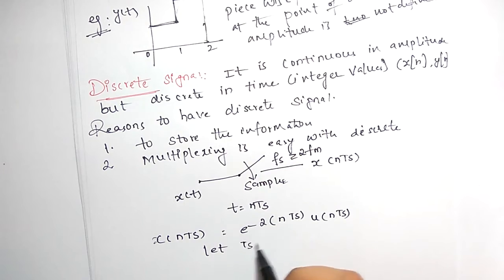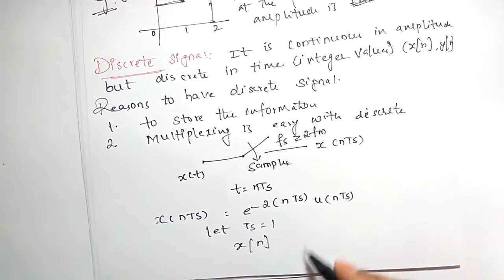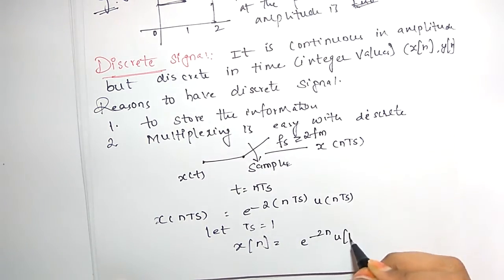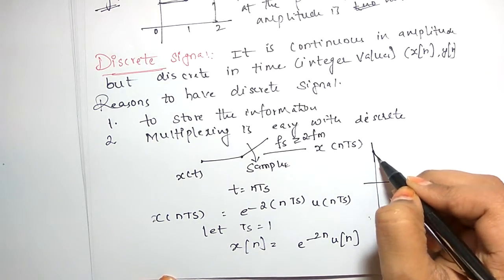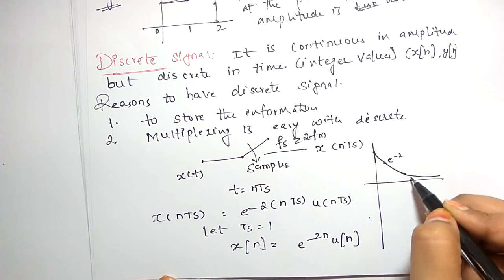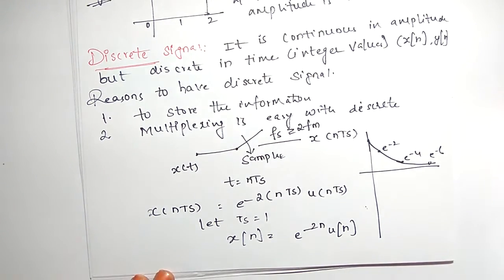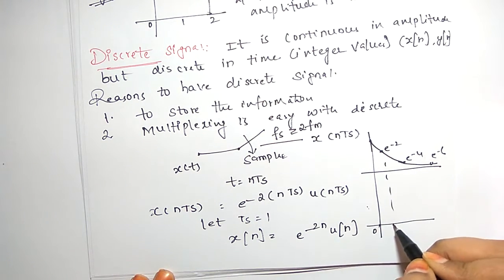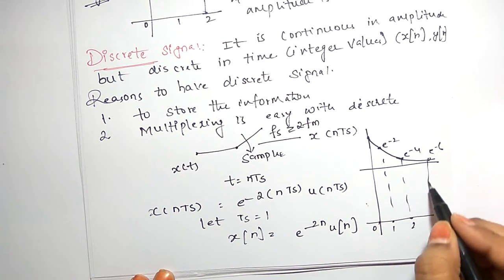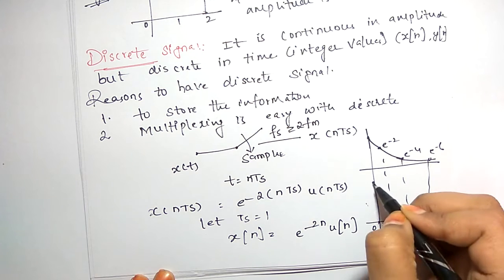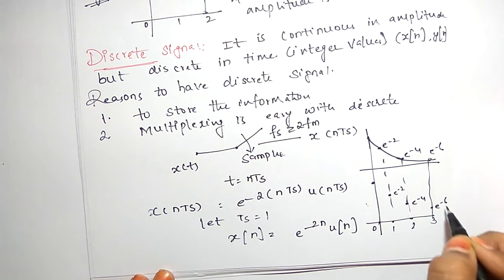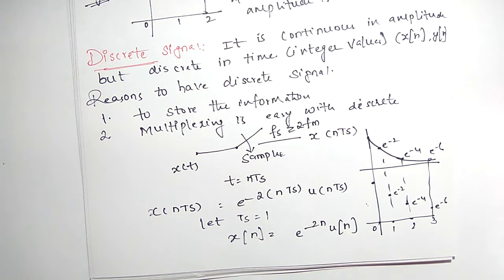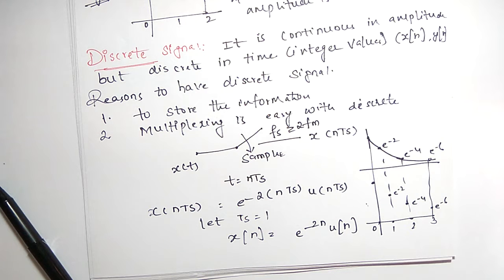If we let Ts = 1, then x(n) = e^(-2n) u(n). So the continuous signal is discretized at time intervals giving values e^(-2), e^(-4), e^(-6), and so on. We can also discard samples having the same amplitude in between through a process called decimation.